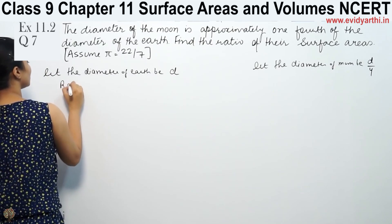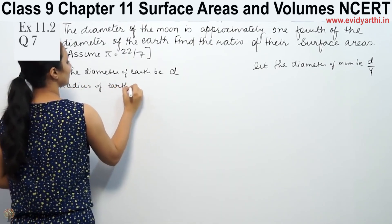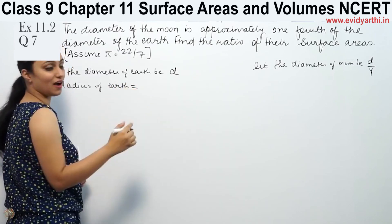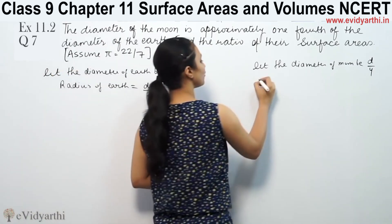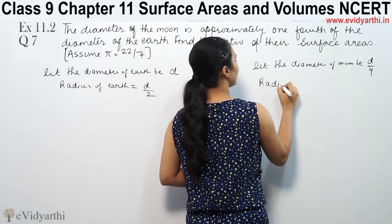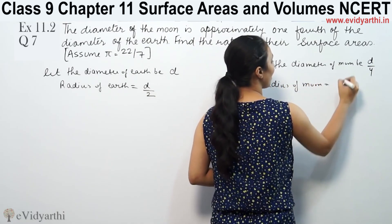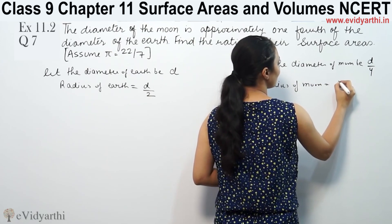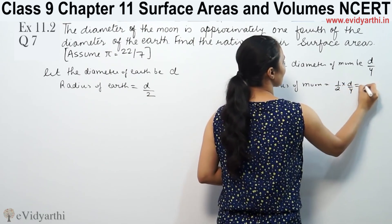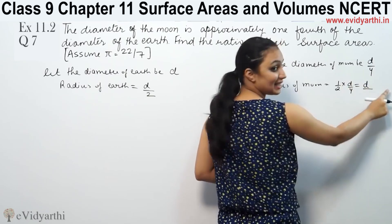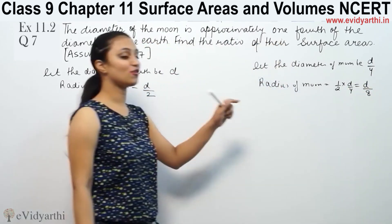The radius of earth is diameter divided by 2, which gives D by 2. Similarly, the radius of moon is half of its diameter, so it is 1/2 into D/4. That means 1 multiplied by D is D, and 2 times 4 is 8. So the radius of moon is D by 8.